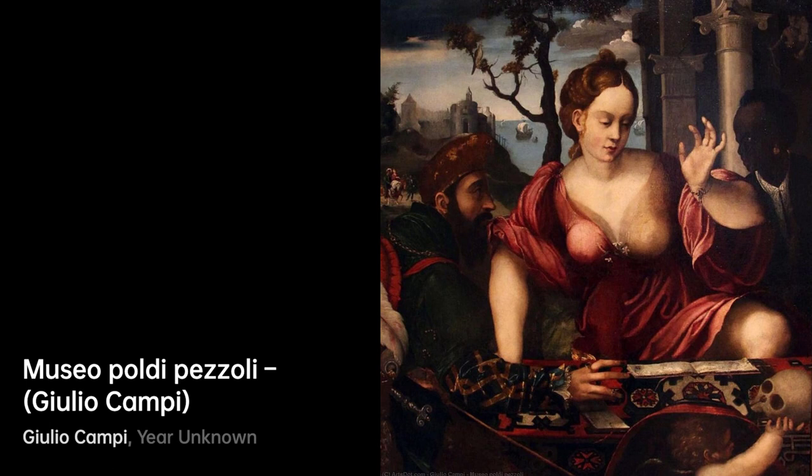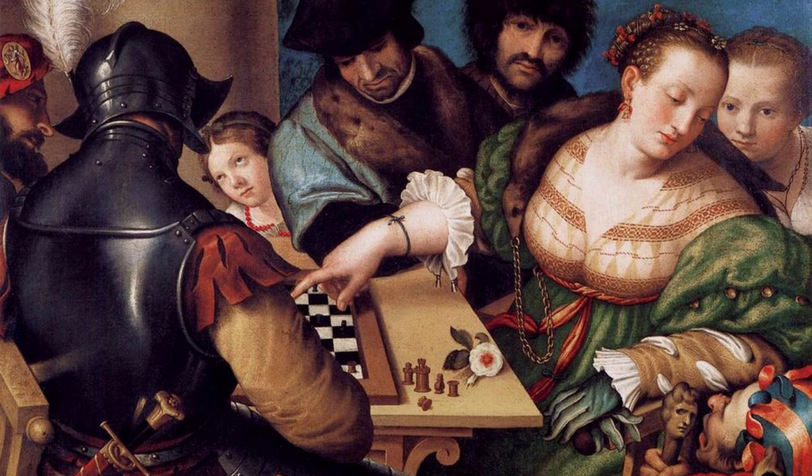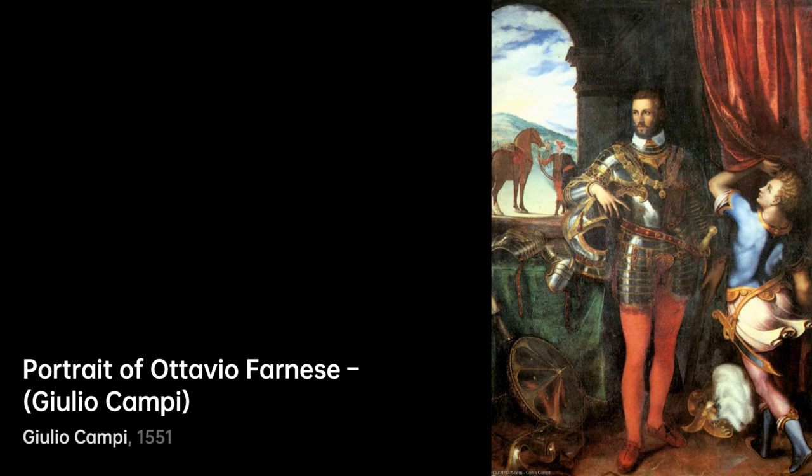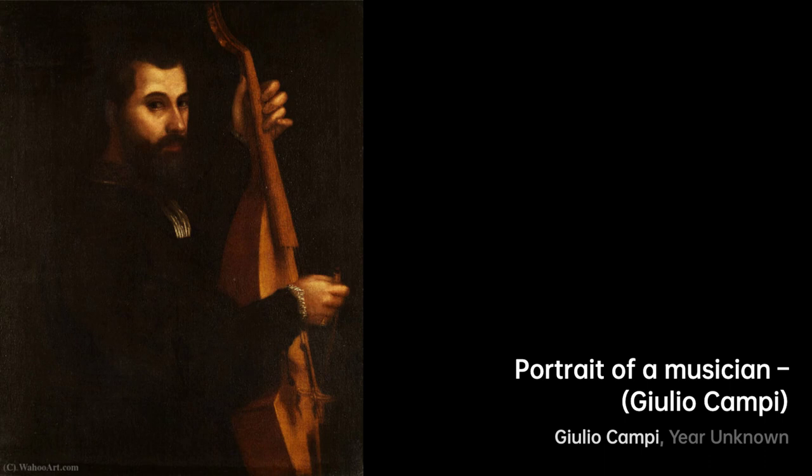Giulio Campi was born into an artistic family in Cremona, where his father Galeazzo taught him the basics of painting. He later studied under Giulio Romano in Mantua and became passionate about combining Lombard and Roman traditions in his work. Campi's Virgin and Child with Sts. Celsus and Nazareth is considered his masterpiece, exemplifying his skillful use of drawing and color. His works are known for their grand conception, vibrant coloring, and deep sense of piety.